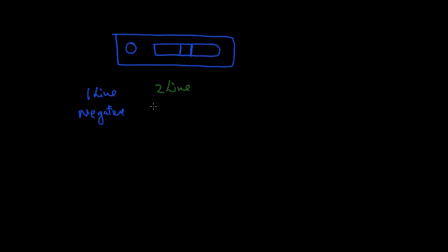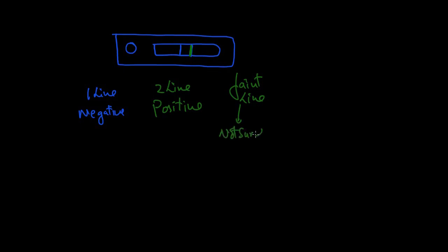Sometimes there is a strange scenario where there may be a faint second line — not clearly positive. In that case, we are not sure, because there are some limitations of this card. Usually this card cannot detect any levels less than 25 international units per liter.